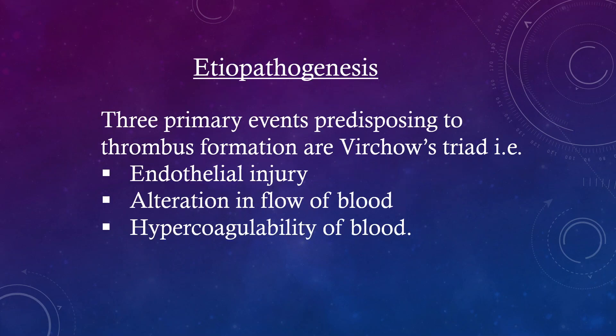Three primary events predisposing to thrombus formation are Virchow's triad: endothelial injury, alteration in flow of blood, and hypercoagulability of blood.